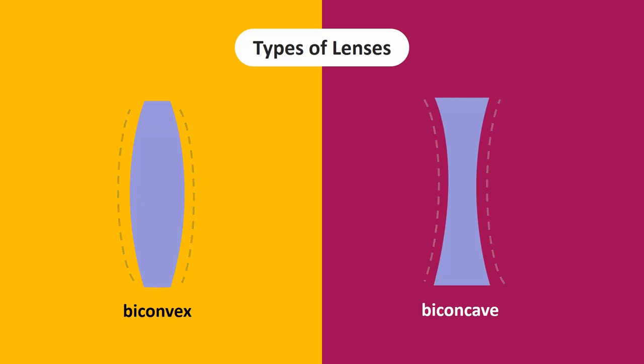There is another way to look at the difference between these two lenses. A convex lens is thicker at the center and thinner at the edges, while a concave lens is thicker at the edges and thinner at the center.